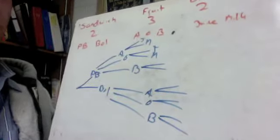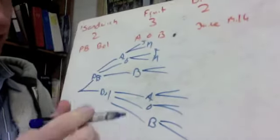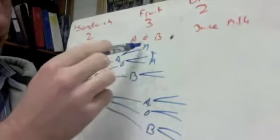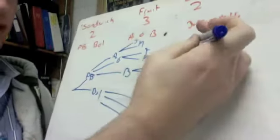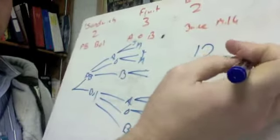And they want to know how many possible outcomes do we have. If you count them up, it's all the branches at the end. So we've got 1, 2, 3, 4, 5, 6, 7, 8, 9, 10, 11, 12. So we've got 12 possible outcomes.